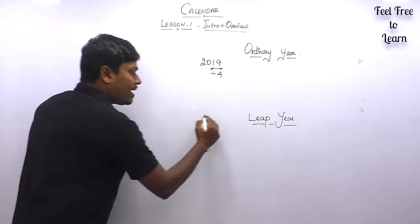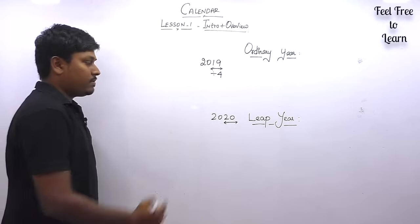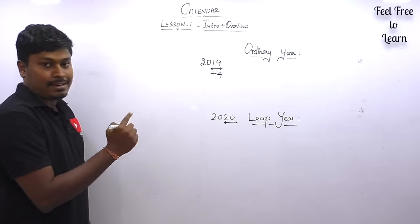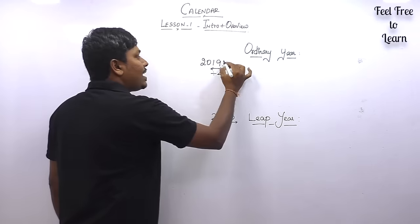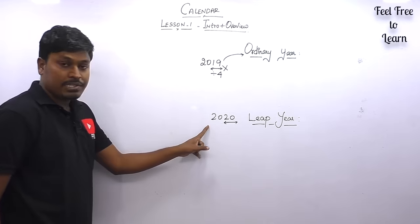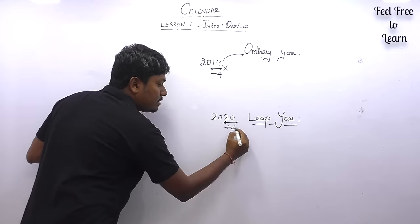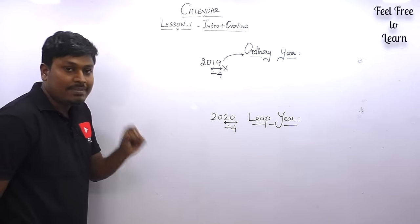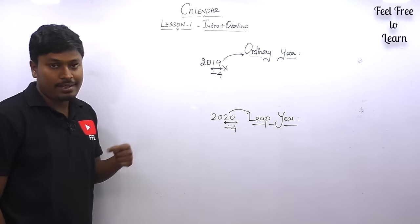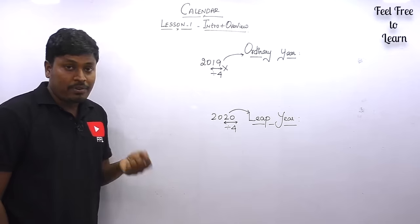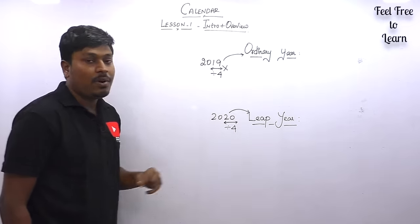For example, we are currently in 2019. The last two digits are 19. Whether 19 is divisible by 4 — no, it is not. So 2019 is an ordinary year. Next year is 2020: the last two digits are 20. Check whether 20 is divisible by 4 — yes, it is. So 2020 is a leap year, while 2019 is an ordinary year.